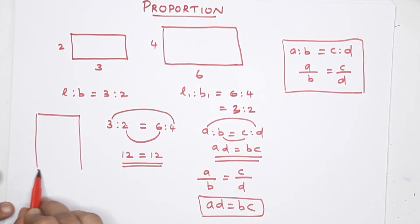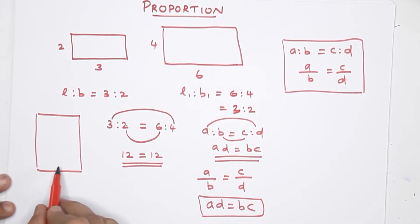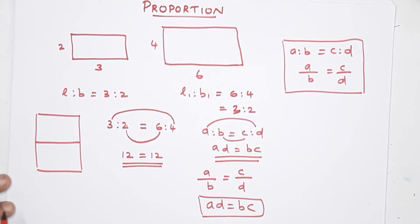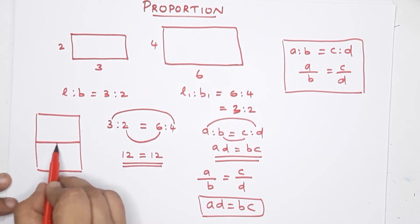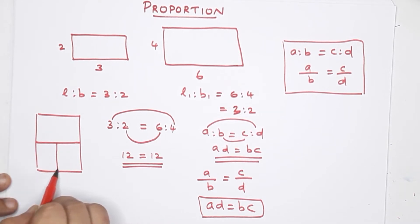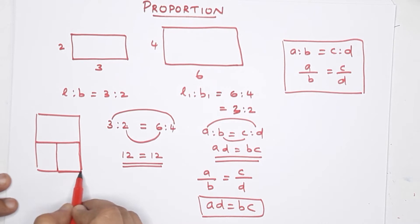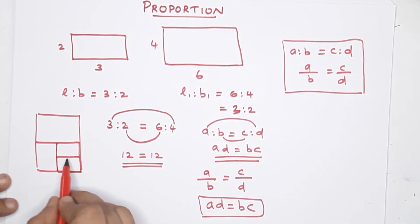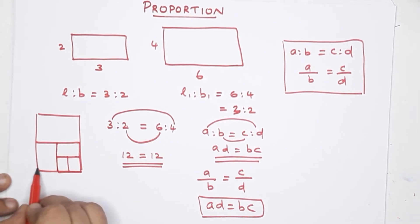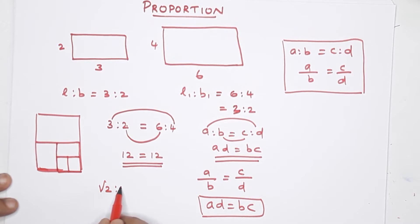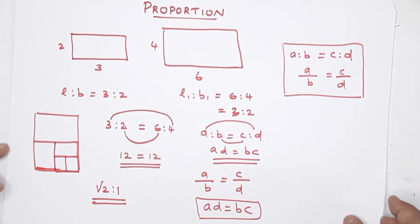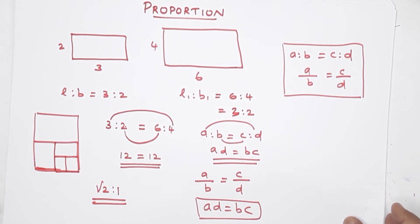Next we will learn about A4 paper. The ratio of the length and length of an A4 paper — the sole value — is root 2 is to 1. This is the ratio. Now we have to write a note: that is root 2 is to 1. This is A4 paper.